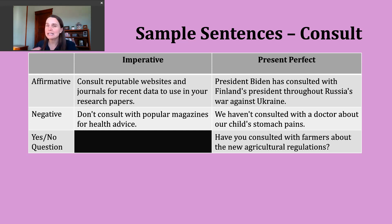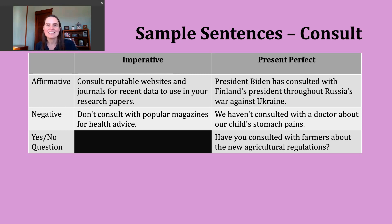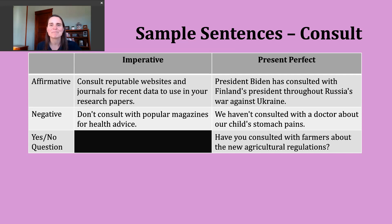This example likely has the meaning of ongoing discussions — an action that started in the past and is still continuing into the present because the war is still ongoing. To make a negative present perfect sentence, start with the subject. If it is I, you, we, or they, use 'have not' then the participle form. If the subject is he, she, or it, use 'has not' then the participle form.